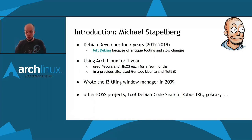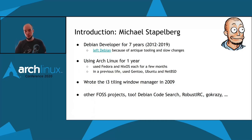You might be familiar with my name from my work on the i3 tiling window manager that I started in 2009, but I've since also done other open source projects such as Debian Code Search, which is a regular expression search engine for all software available in Debian; Robust IRC, an IRC network without net splits on top of Raft; GoCrazy, an application platform for Go programs on the Raspberry Pi; and a couple of other smaller projects.